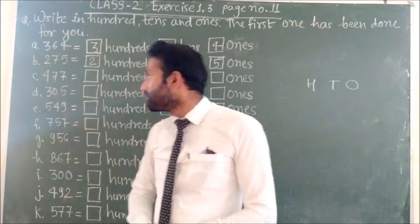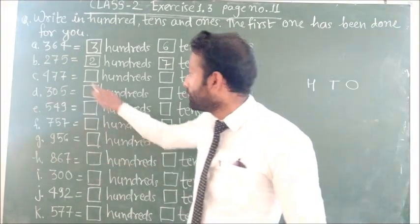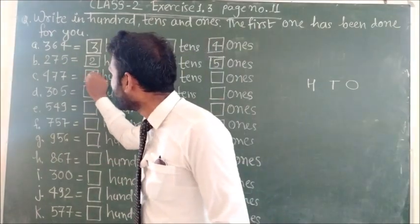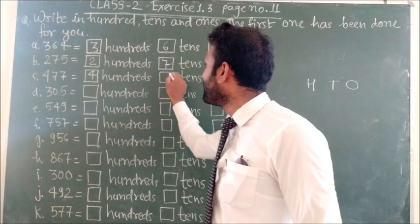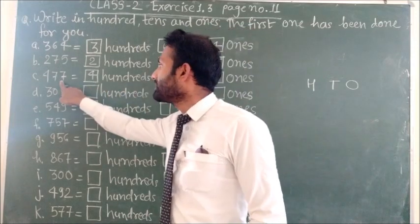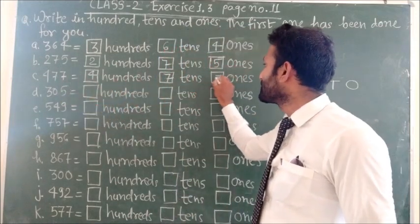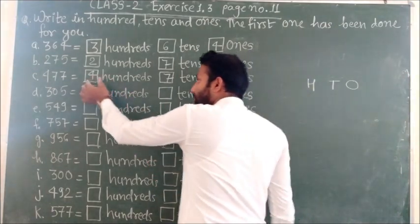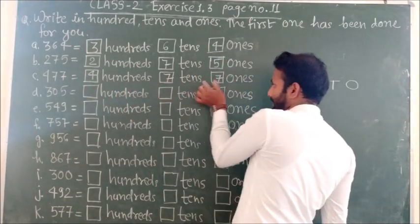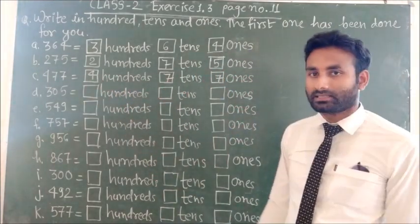Next is 477. First we have 4 hundreds, next is 7 tens, and last is 7 ones.